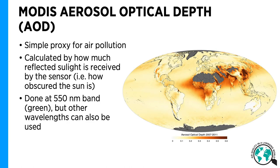What MODIS measures is aerosol optical depth, AOD. It's one of the most simple and also most useful parameters in air quality remote sensing. AOD is calculated by the amount of reflected sunlight that is received by the sensor, as opposed to being absorbed or scattered by particles, also known as aerosols, in the air. In other words, it measures how obscured the sunlight is — this is a very good proxy for estimating amount of air pollution. Typically it's calculated using 550 nanometer wavelength, which is green light, but other wavelengths can be used as well.